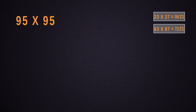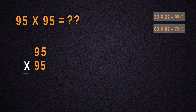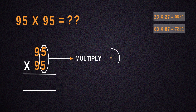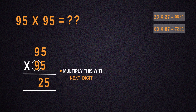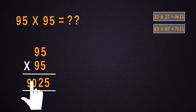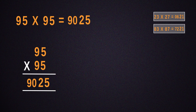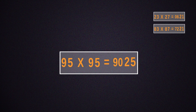Let's multiply 95 by 95. For that, the number obtained by multiplying 5 by 5 will be 25 and that should be put down. Then, multiply 9 with its next number, which is 10. Place the result next to 25 and we get 9,025 as the answer.